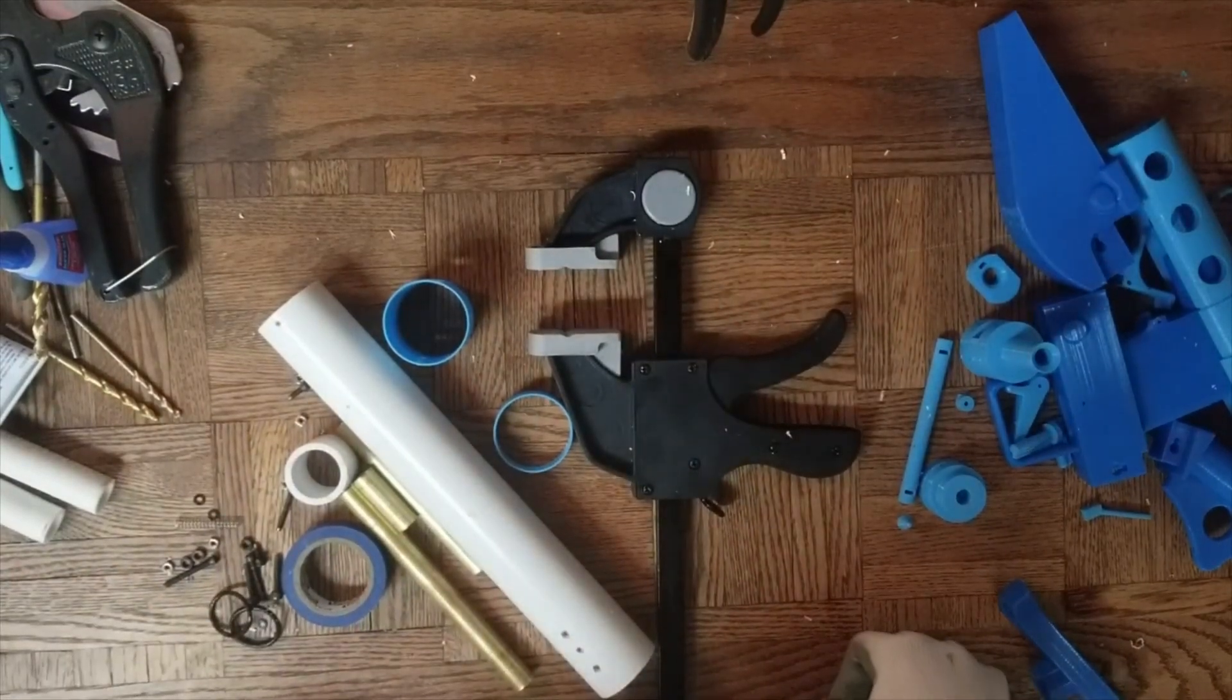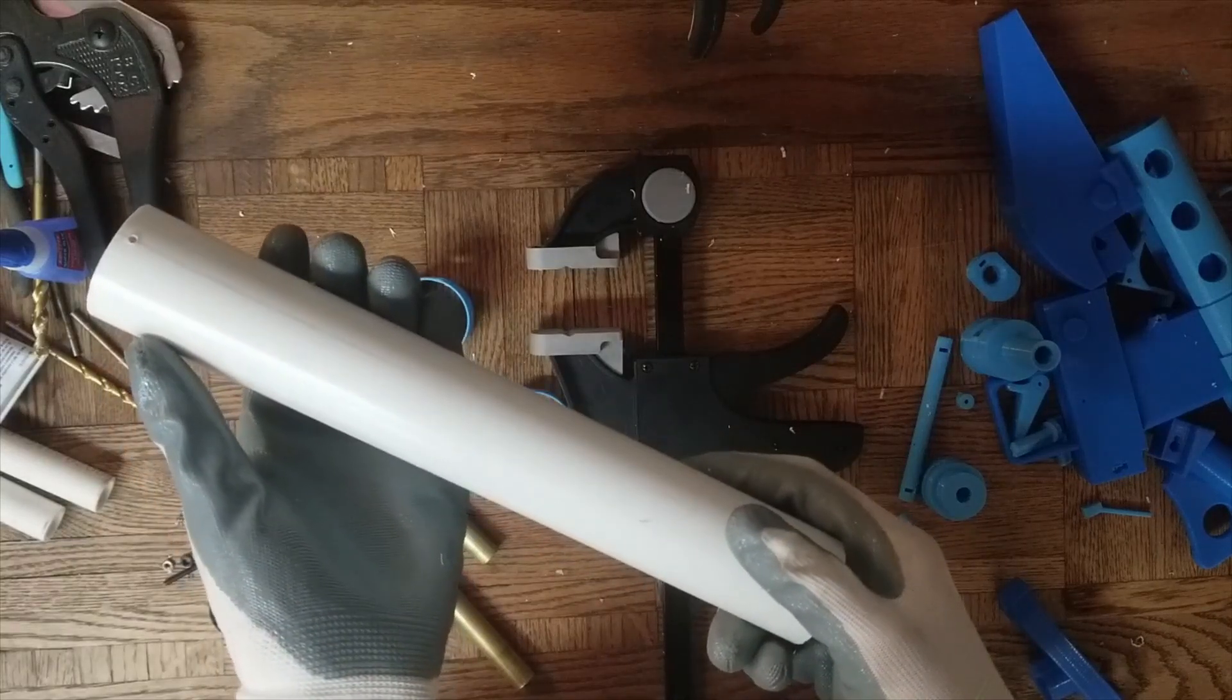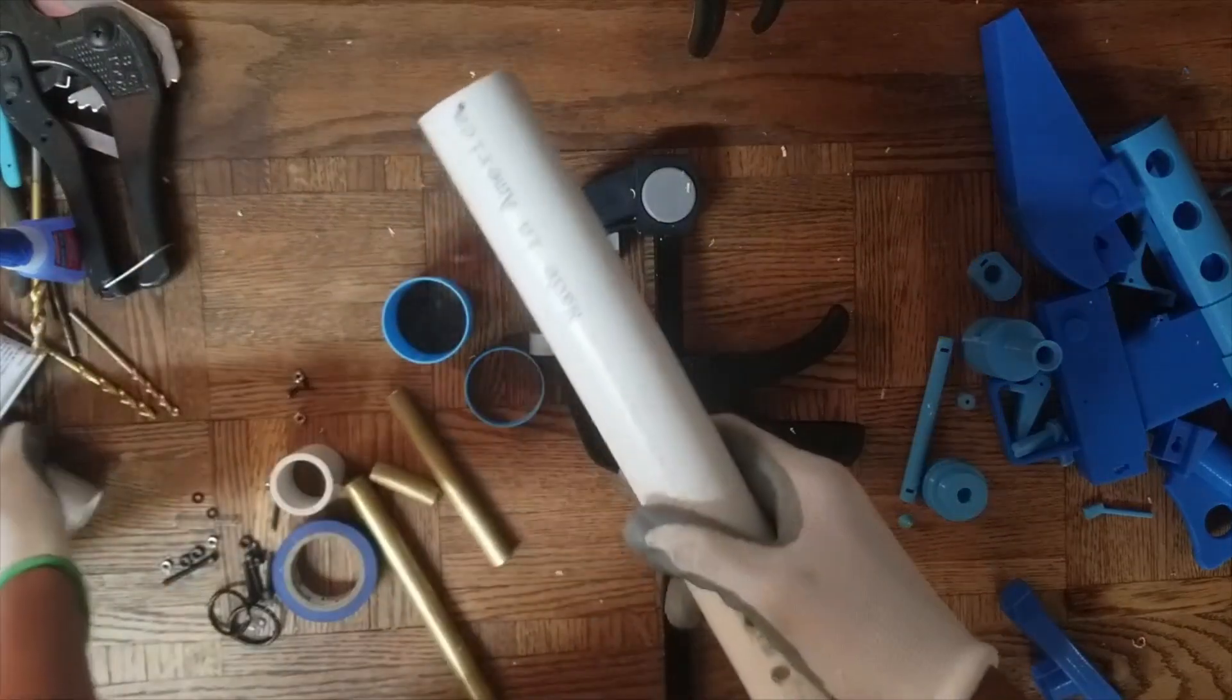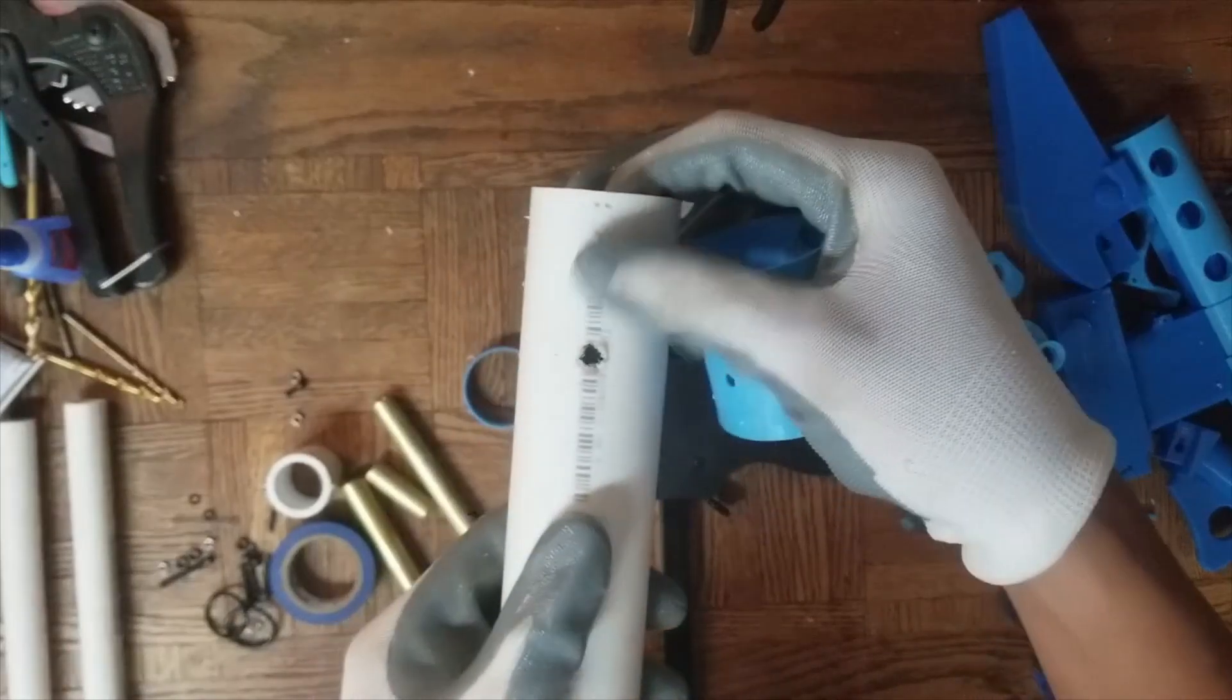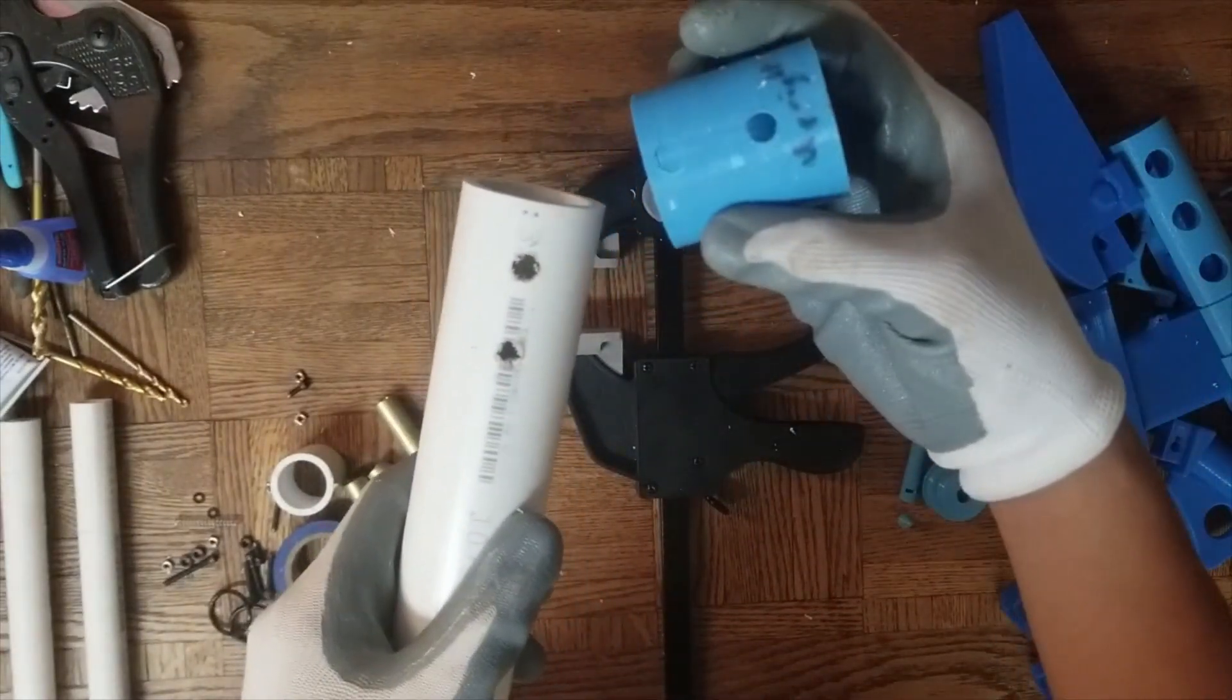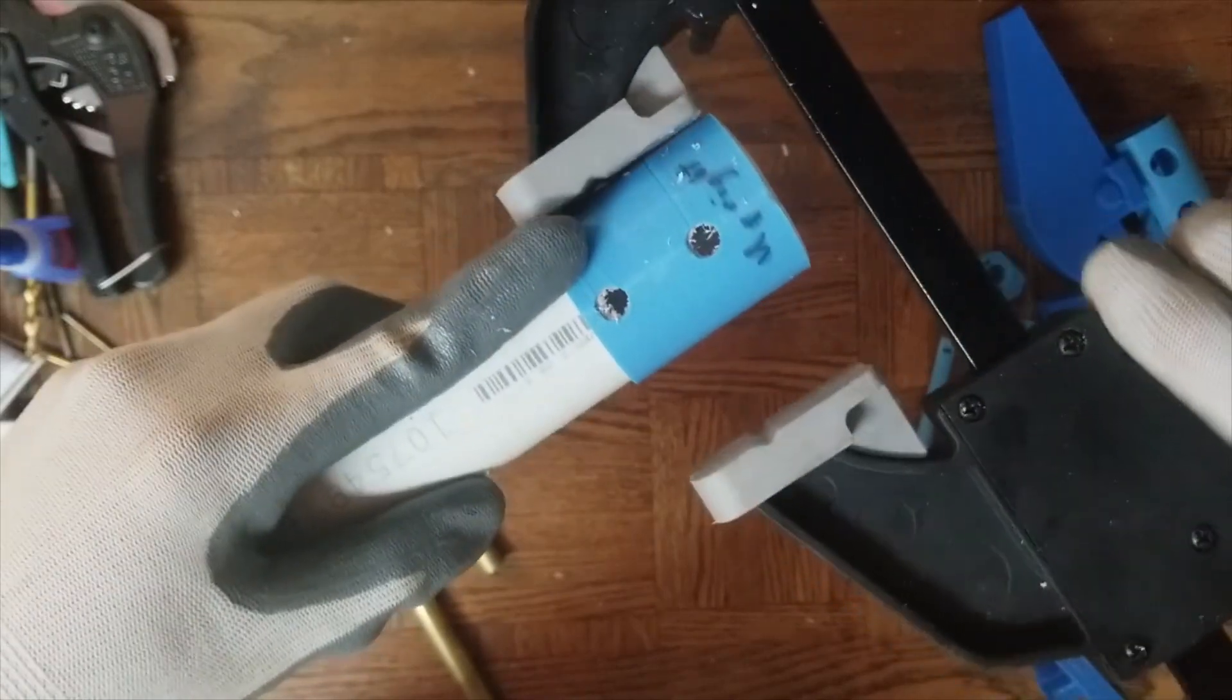Okay, now for the prep. First cut your PVC to length. I use a chop saw. All the lengths and hardware you'll need to get is in the Thingiverse description. Once you cut your brass and your PVC, you'll need to attach your drill guide and drill it. I recommend using a drill press so the holes are straight.